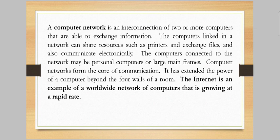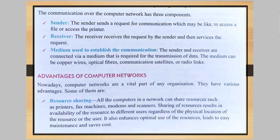Next is communication over the computer network. The computer network has three main components: first is sender, next is receiver, and the medium used to establish the communication. The sender sends a request for communication, which may be like accessing a file or a printer.